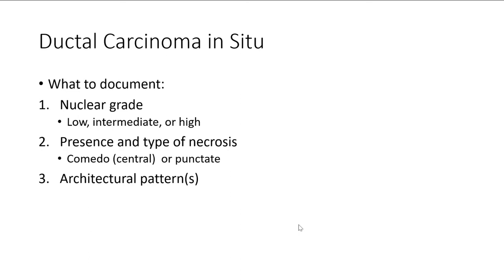With ductal carcinoma in situ, what to document: you need to document nuclear grade — low, intermediate, or high. It is not uncommon to see a spectrum, so you can report low to intermediate or intermediate to high. You must also document the presence and type of necrosis. The most important type is central with expansile features, called comedonecrosis. You can also see punctate central necrosis with no impact on surrounding epithelium. Architectural patterns can be reported but are of less clinical significance.